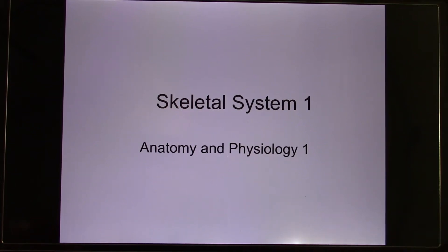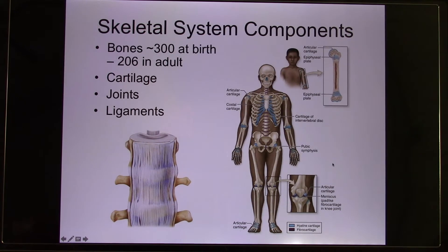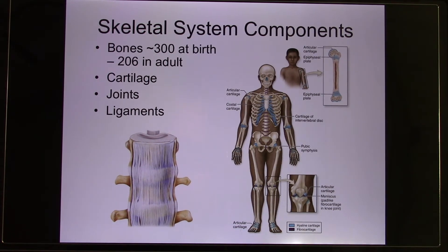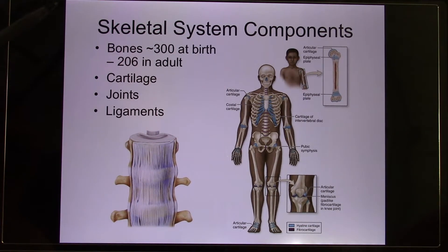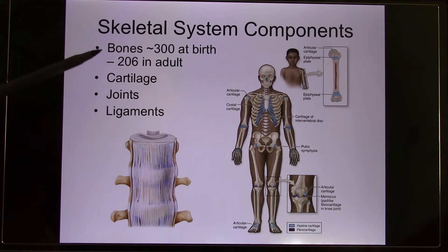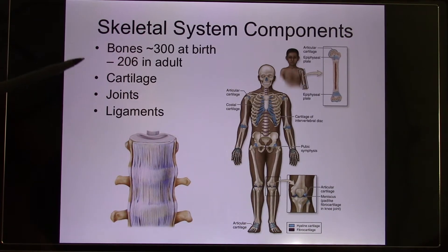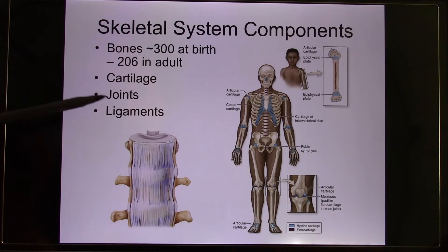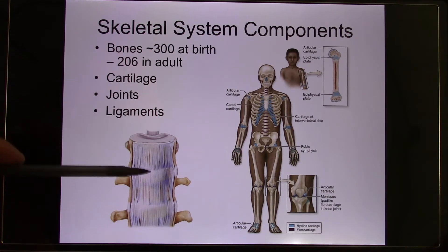We're in skeletal system one. Your body has 206 bones. Children have more because a lot of bones fuse together. This system mainly covers the bones and also the cartilage, the soft bones. And between bone and bone we've got a joint and the ligament — the duct tape — that connects bone to bone.